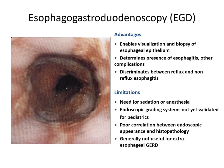Esophago-gastroduodenoscopy is a very crucial tool for investigating patients with reflux. Its advantage is that it enables you to visualize and take biopsies from the esophageal epithelium. You can determine if the patient has esophagitis or worse complications like Barrett's esophagus, and it can discriminate between reflux and non-reflux esophagitis — for example, eosinophilic or infectious esophagitis — by taking biopsies or by visualization.